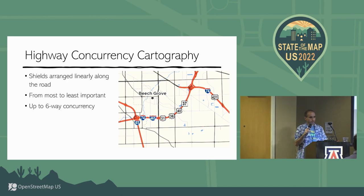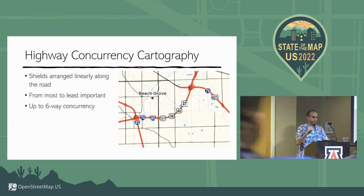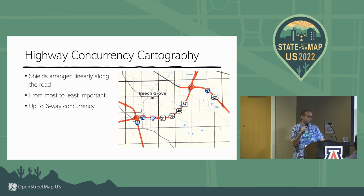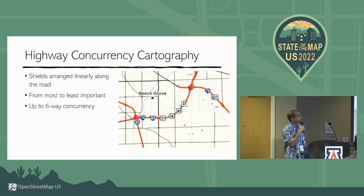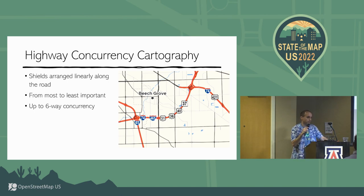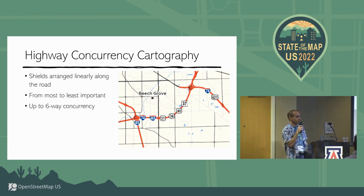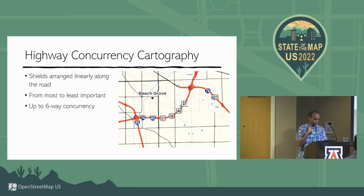I want to talk about concurrency cartography. A concurrency is when two or more routes share the same stretch of roadway. We draw them linearly along the path of the roadway, ordered so the most important shields go first — interstates, then US routes, then state routes, and so forth — and within each route network they're ordered numerically. We support up to a six-way concurrency; the stretch shown is from the Indianapolis loop highway, which actually has about eight concurrent routes.